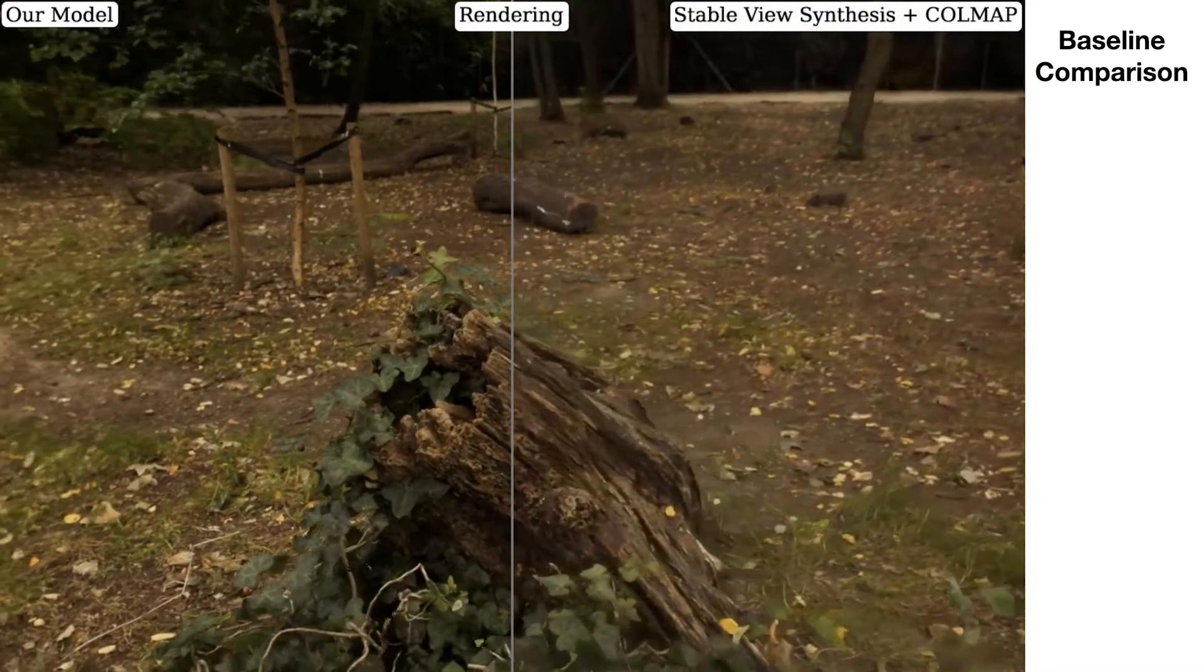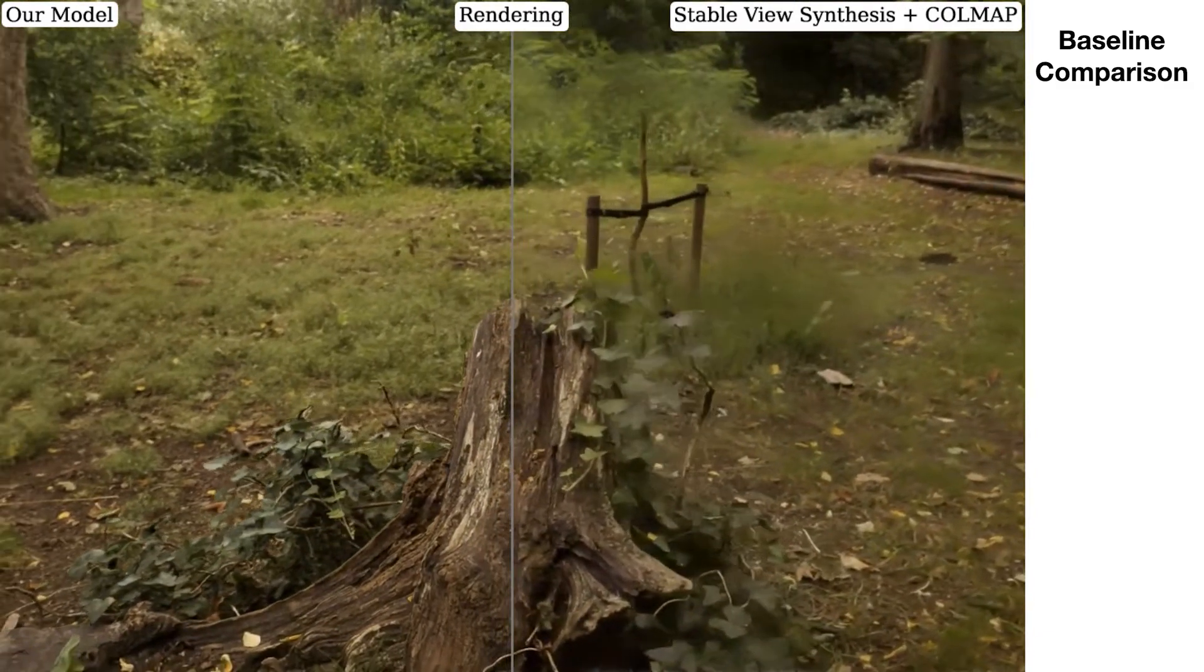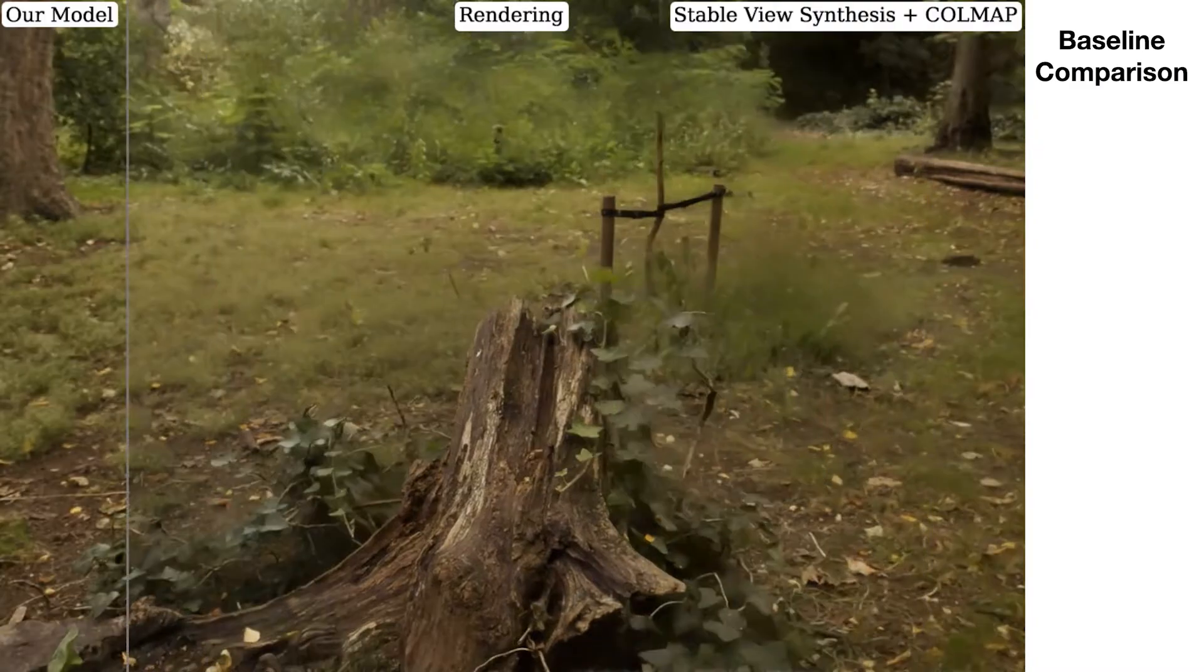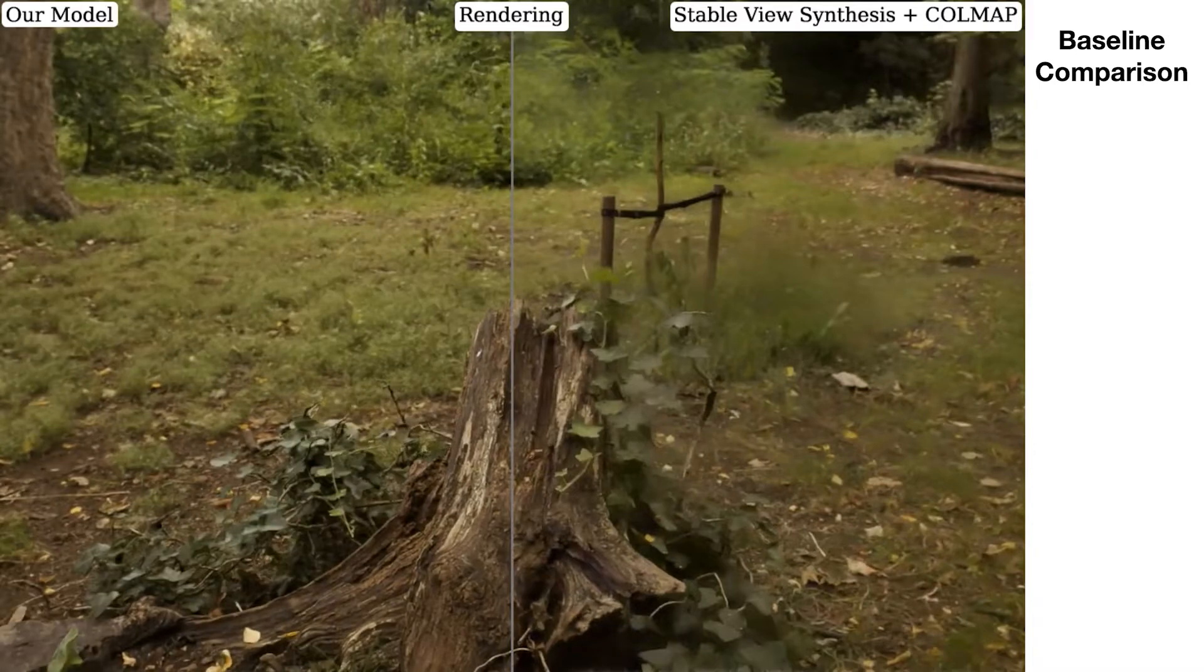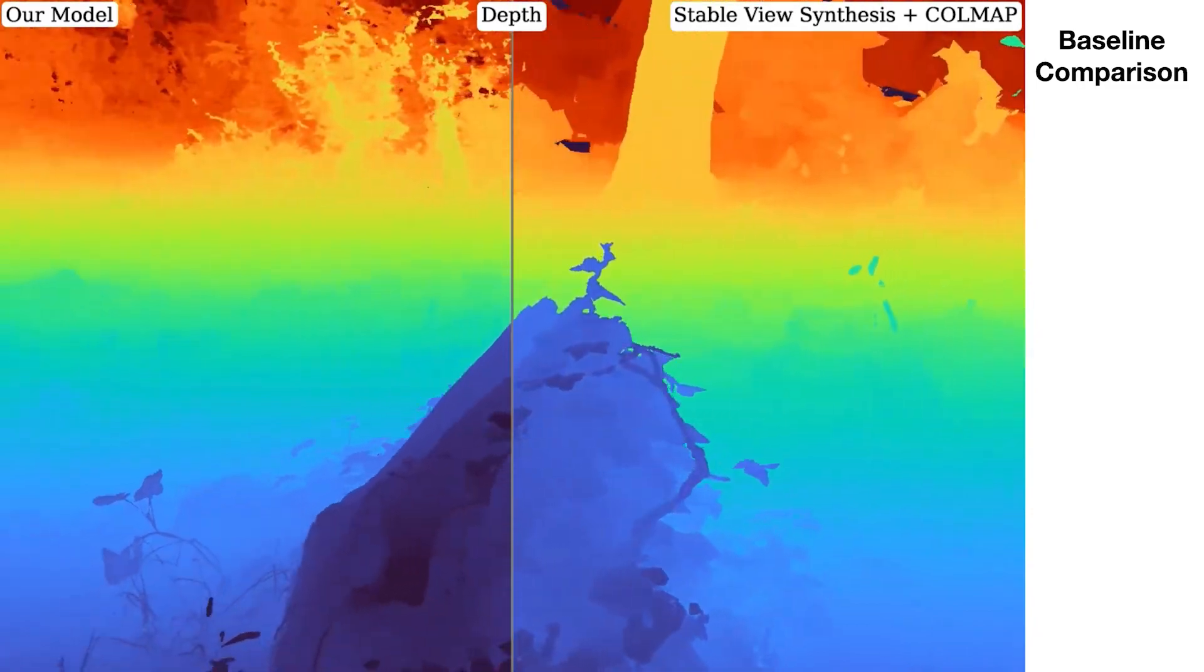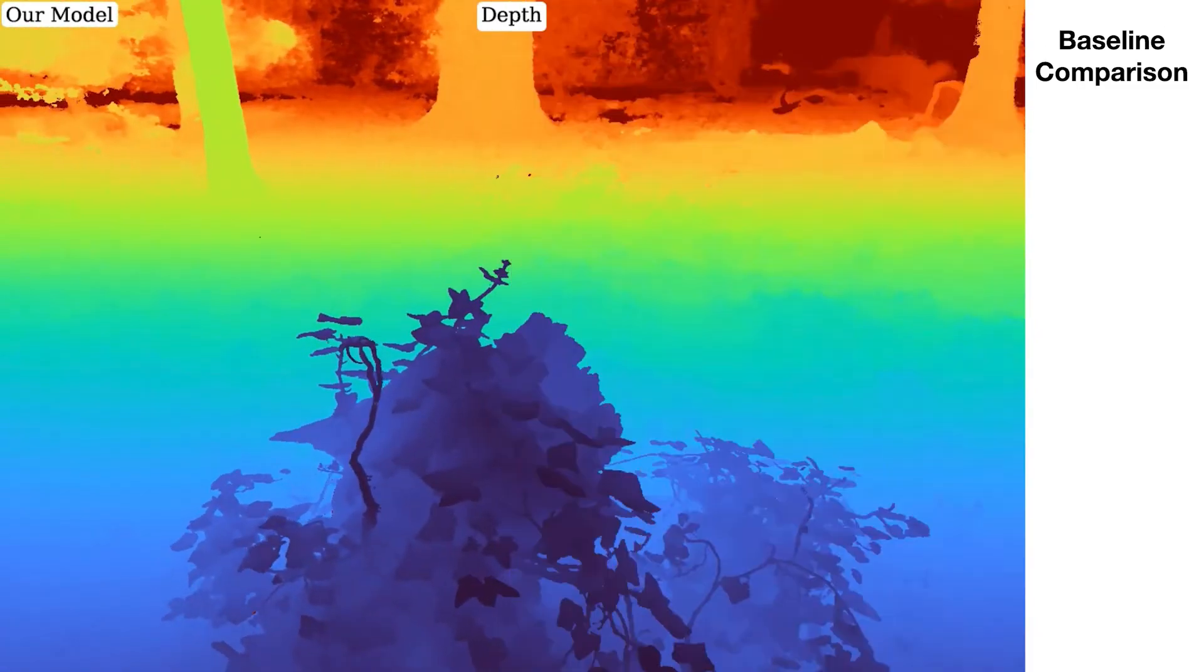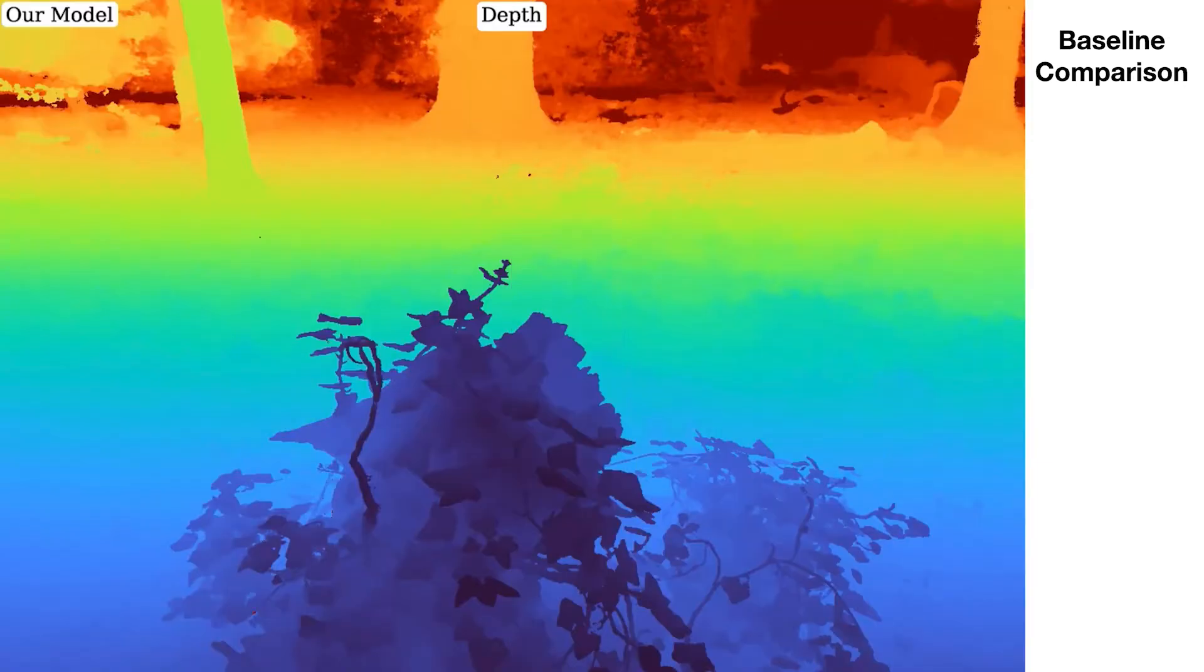Here we compare against stable view synthesis which was the top performing non-NERF baseline we evaluated our dataset on. Some renderings from SVS look very realistic but it's prone to severe failure modes that result in very blurry renderings. These failure modes seem to occur because SVS relies on a proxy geometry that's produced by COLMAP which you can see here and that geometry can sometimes be accurate. Our model doesn't require any geometry as input and produces more realistic depth maps than COLMAP.